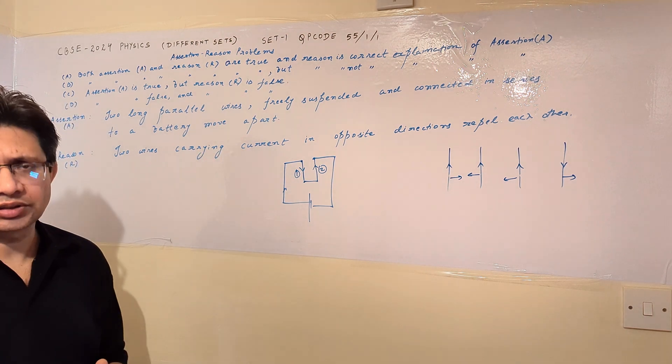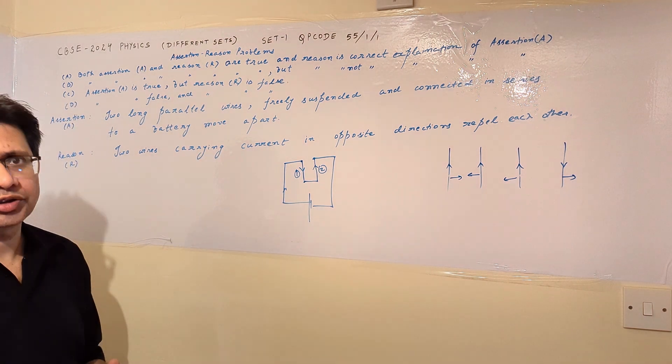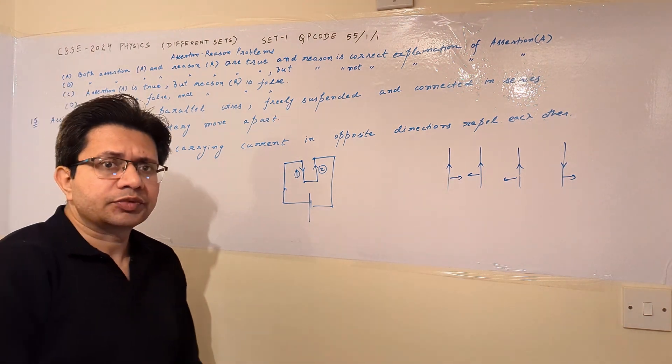So we can say that the assertion as well as the reason, both are correct, and the reason is the correct explanation of the assertion. So hope you understand the solution. Thank you.